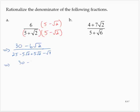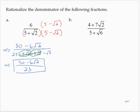So that's 30 minus 6 times the square root of 2 over 25. Notice what happens here — those middle terms add up to 0, they go away. And I'm left with 25 minus the square root of 4, which is 2. 25 minus 2 is 23, so I have 30 minus 6 times the square root of 2 over 23.